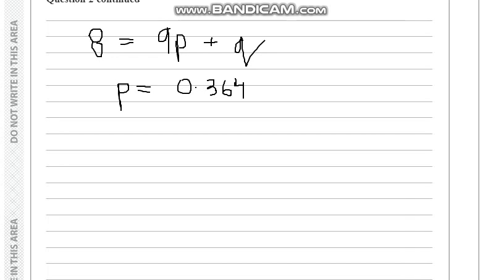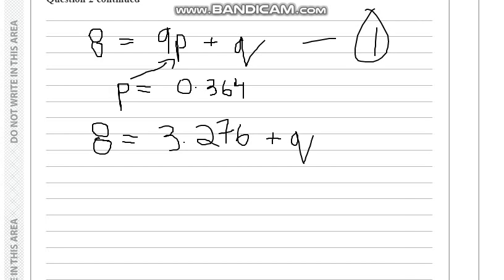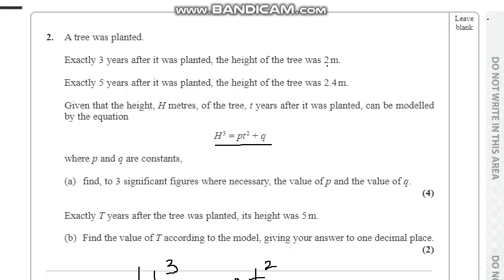Now that we know our p value, we can plug the p value in the first equation. We get 8 equals 3.276 plus q. To get q, we subtract 3.276 from both sides so we get q equal to 4.724. So we have found p and q and that's our answer.